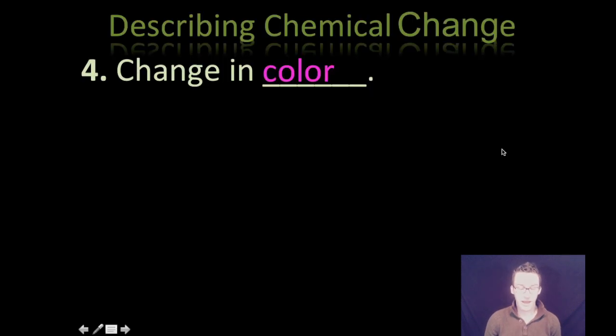The fourth thing we're looking for, as you saw in that last observation as well, is a change in color. These four observations are really great ways to let you know that the change that you have observed is a chemical change and not a physical change.